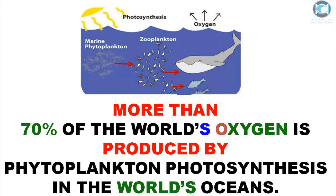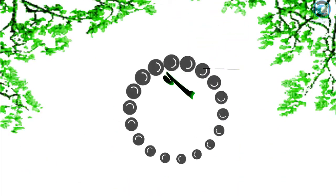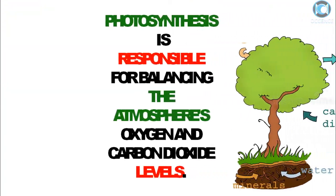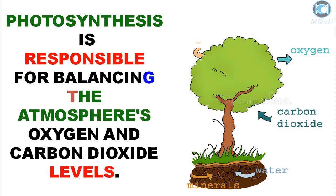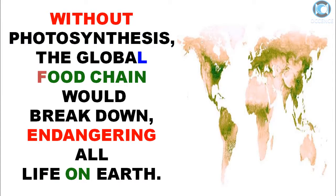More than 70 percent of the world's oxygen is produced by phytoplankton photosynthesis in the world's oceans. Photosynthesis is responsible for balancing the atmosphere's oxygen and carbon dioxide levels. Scientists have discovered a sea slug that uses photosynthesis to create energy. Without photosynthesis, the global food chain would break down, endangering all life on earth.